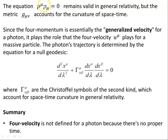So the magnitude squared of the four momentum zero remains valid in general relativity, but the metric accounts for the curvature of spacetime. Since the four momentum is essentially the generalized velocity, and that's really what I'm trying to get across in this first video. The photon's trajectory is determined by the equation for a null geodesic, where gamma mu alpha beta are the Christoffel symbols of the second kind, which account for the spacetime curvature in general relativity.